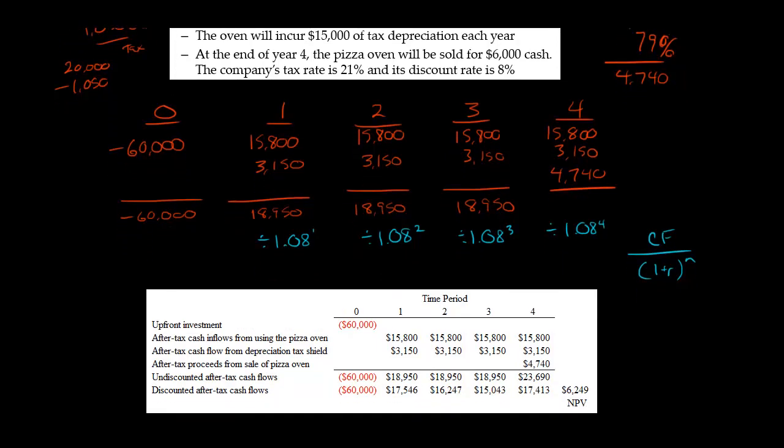This number right here is $23,690. That's the sum of this. So now, here are our after-tax cash flows. We don't need to discount the present value because it happens today. We discount this, $18,950 divided by 1.08 to the first power. That comes out to $17,546. And then here, this one is $16,247. And then this one is $15,043. And then this number here is $17,413. Remember too, we have the negative $60,000 that didn't need to be discounted.